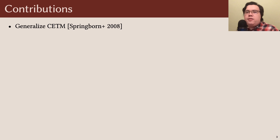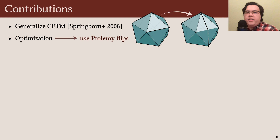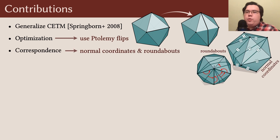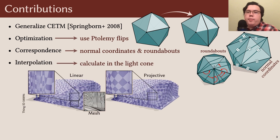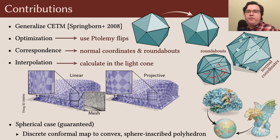Our algorithm is a generalization of CETM. For those of you who know that paper, here's the difference. First, unlike the fixed triangulation CETM, we perform Ptolemy flips during optimization, which completely avoids the problem of invalid geometry. To keep track of the correspondence between the original mesh and this mesh with flipped edges, we introduced a robust new data structure consisting of normal coordinates and roundabouts. Third, we propose a new interpolation scheme based on the light cone, which produces much better results than ordinary linear interpolation in this setting. And finally, we also compute discrete conformal maps to the sphere.